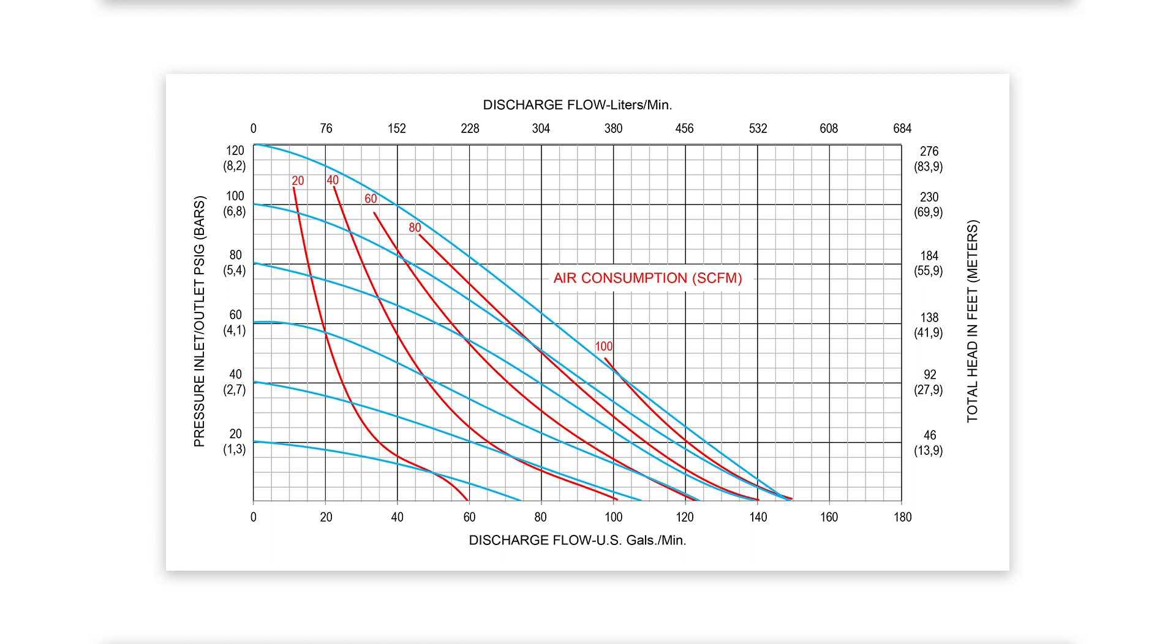For example, this performance curve is defining this AODD pump's overall operating range from a minimum of zero gallons per minute to a maximum of over 150 gallons per minute.